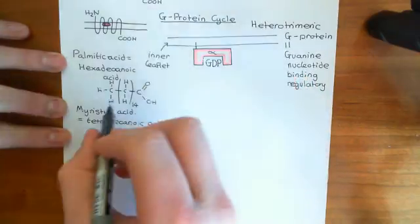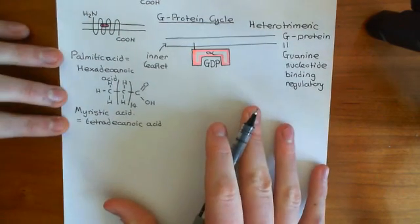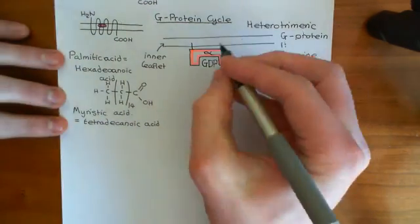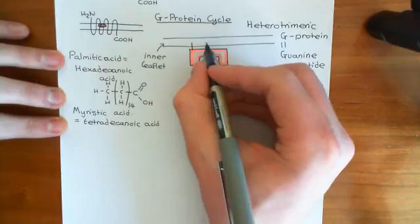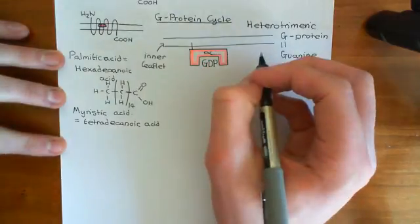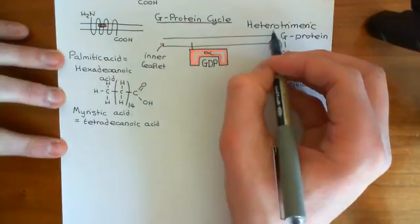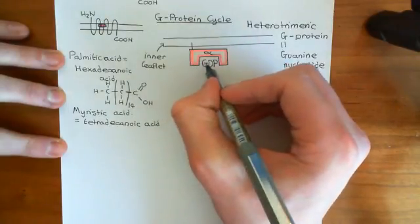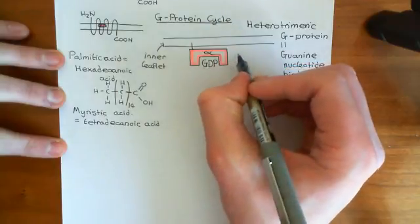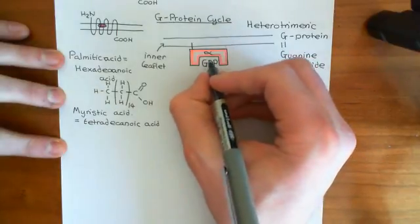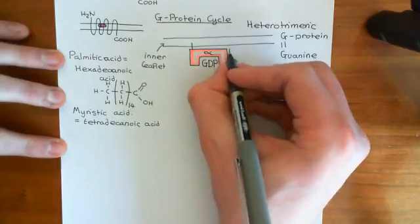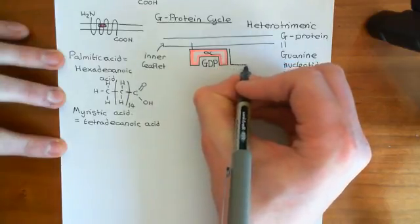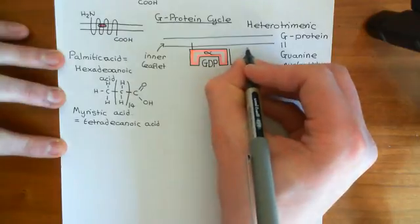Some alpha subunits even have two of these lipid moieties, but that's very rare. So here is my alpha subunit, currently in the off state and being held at the phospholipid bilayer. Now, whilst the alpha subunit is in the off state and has guanosine diphosphate bound to it, it can associate with the other two subunits. However, when it's in the on state, it won't associate with these two. But these other two always remain with each other.